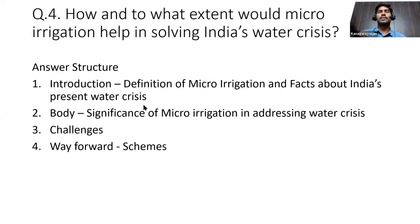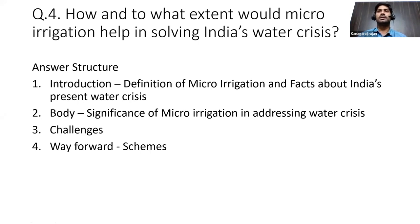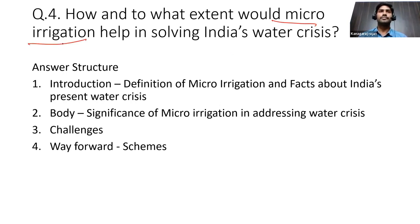Question number 4: How and to what extent would micro irrigation help in solving India's water crisis? This question is about the role of micro irrigation in solving India's water crisis. These are evergreen topics in agriculture — we are talking more about resource conservation technologies like precision farming, micro irrigation, and conservation agriculture. These are the latest emerging topics in agriculture.